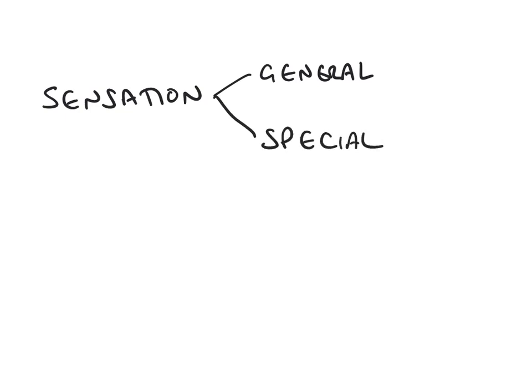The remit of the section on the somatosensory system primarily focuses on general sensation. Special sensation specifically refers to modalities such as hearing and vision. But we're going to be focusing very much on general sensation, which generally refers to sensations that are detected through stimulation of the body wall. That could be the skin or the mucous membranes, for example.